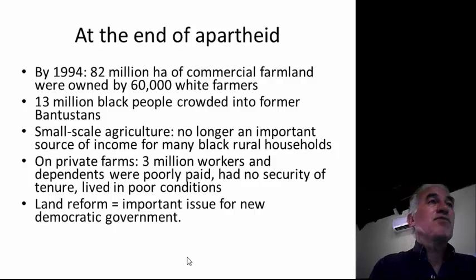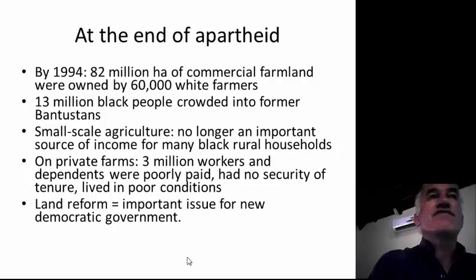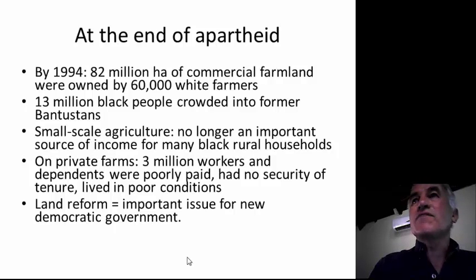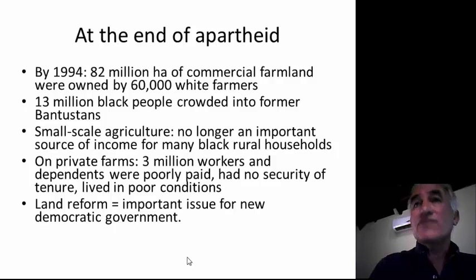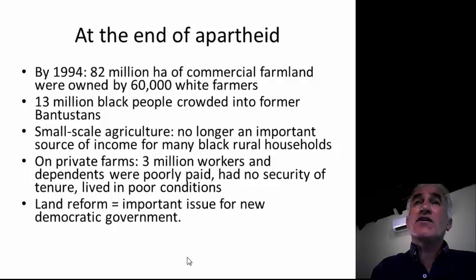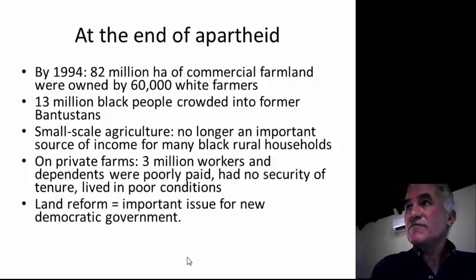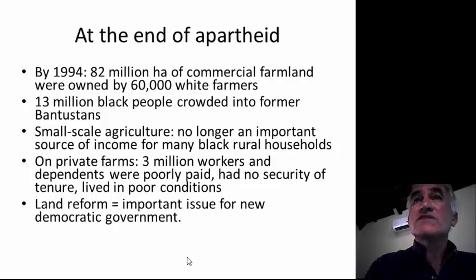By 1994, after many decades of state policies which privileged white farming at the expense of black farmers, people had become dependent on income from migrant work — going to work in cities, factories, and mines, as well as on commercial farms. By the end of the 1980s and beginning of the 1990s, most rural households no longer depended on agriculture as their main source of income. Before social grants, people depended on remittances from migrant workers and wages, with only a little small-scale subsistence-oriented agriculture.